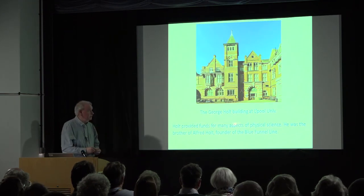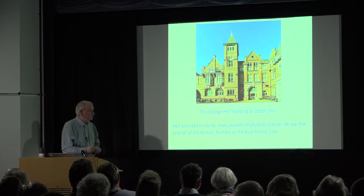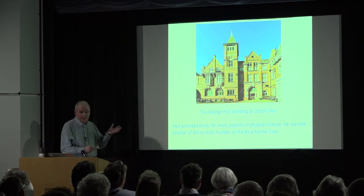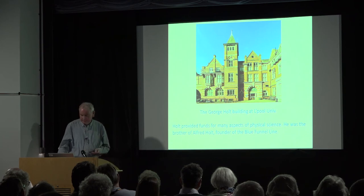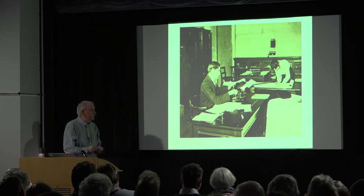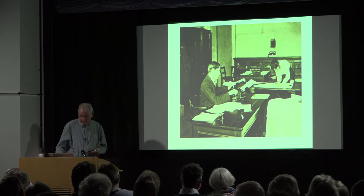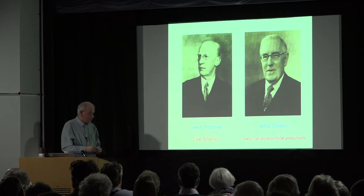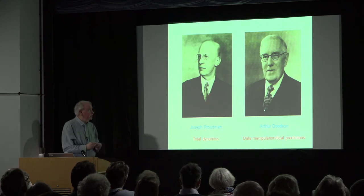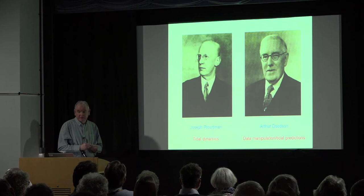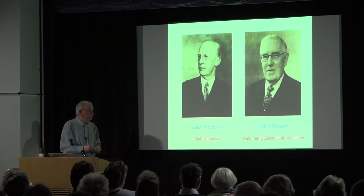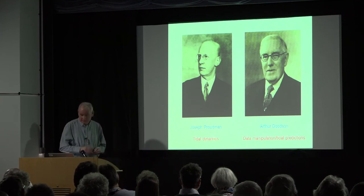The first place the LTI was housed was the George Holt Building — Holt was connected through his brother with the Blue Funnel Line, another shipping company. This is a young Doodson writing a letter, and that's his first assistant whose name I've never found out. This is Proudman — he was quite jolly in spite of this rather austere picture. Proudman was actually a good historian as well as a scientist, and Doodson was excellent at handling numbers in the days before computers, which led to his work on tidal predictions.